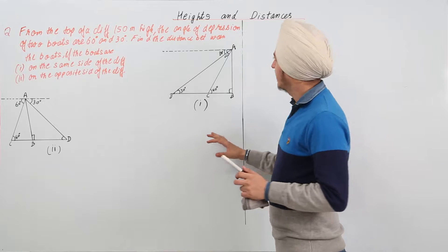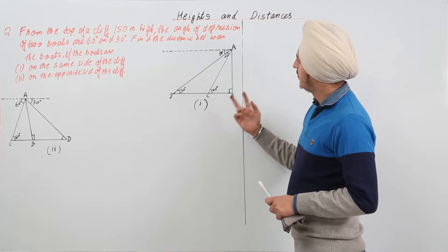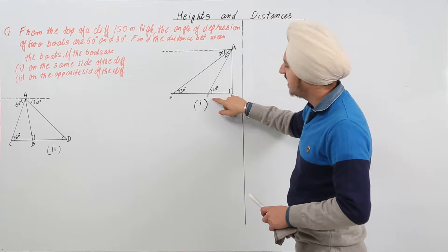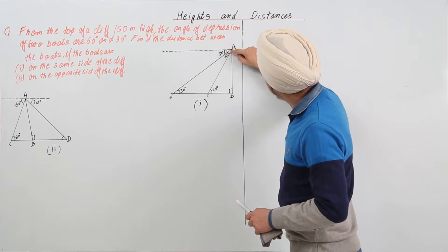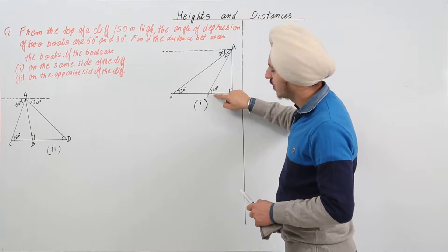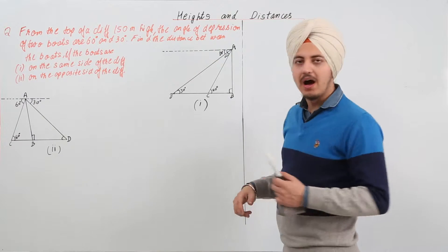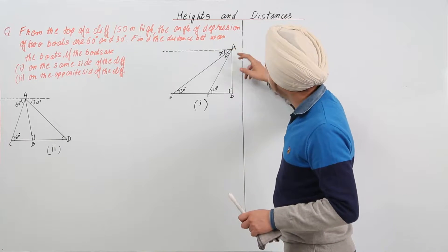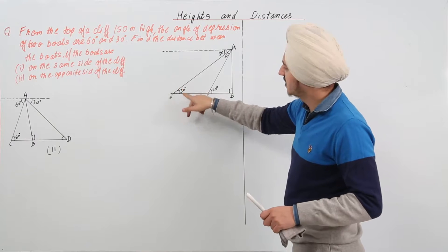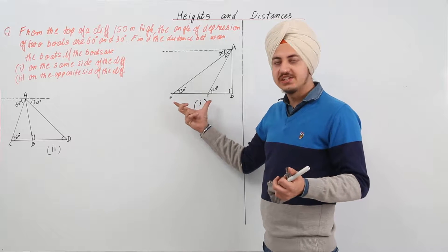In the first part, there is a cliff — let the cliff be AB. There is a boat C with an angle of depression from the top equal to 60 degrees. This angle is 60 degrees, and the alternate angle is also 60 degrees because AB and the horizontal line are parallel. The other boat D has an angle of depression equal to 30 degrees, and we need to find the distance CD between both boats.